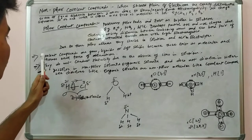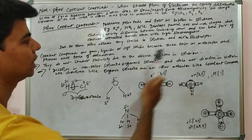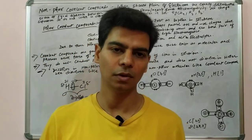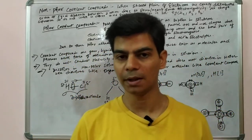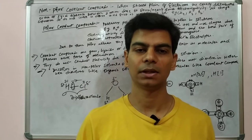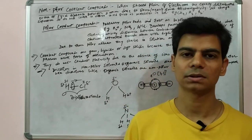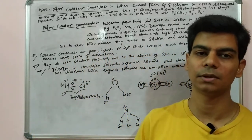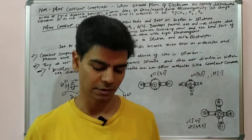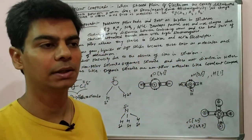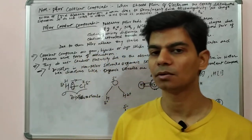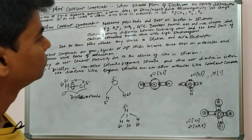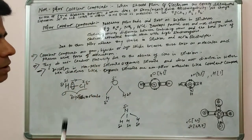Covalent compounds are gases, liquids, or soft solids because they exist as molecules and possess weak forces of attraction. In contrast, electrovalent compounds like magnesium chloride exist as solids because their cations and anions have a very strong force of attraction. In covalent compounds there are no cations and anions, so the force of attraction between molecules is low and they exist as gases, liquids, or soft solids.